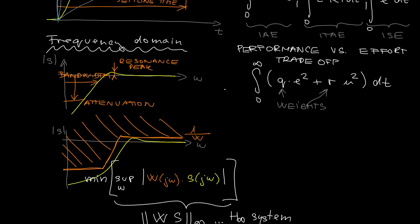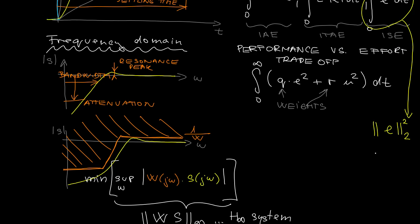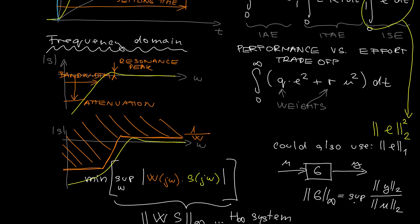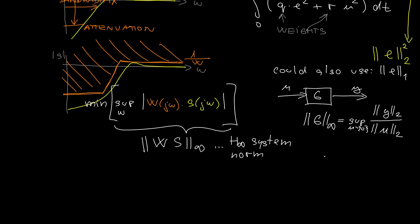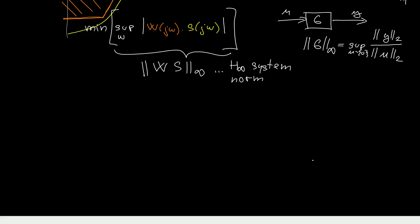The concept of norm can also be identified in the time domain, where the integral of square of the error can be seen as the squared 2-norm of the signal, or the integral of absolute error as the 1-norm. In fact, the h-infinity norm can be seen as a worst case gain of 2-norm of the output with respect to the 2-norm of the input, but more on system norms later.